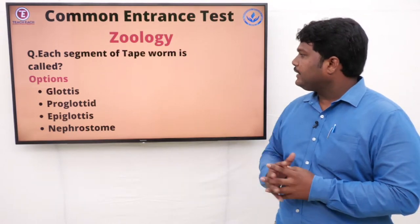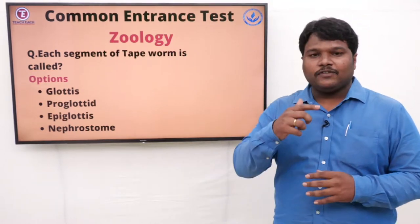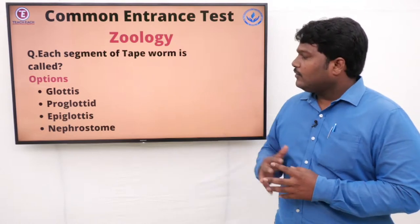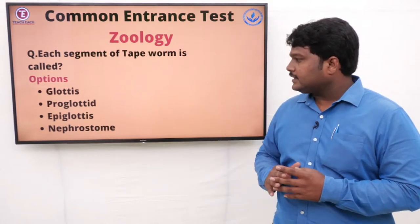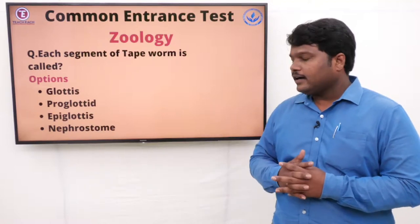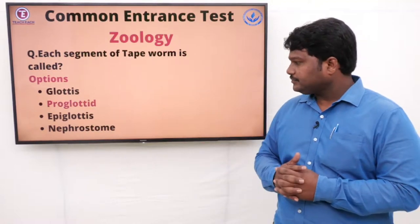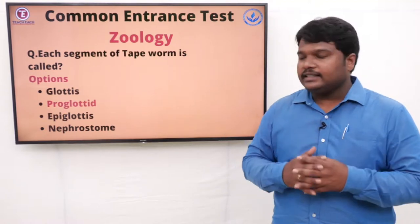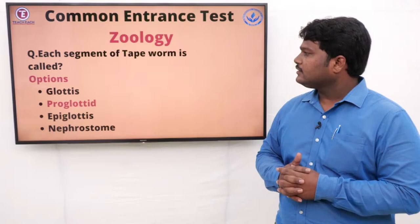Question 28: Each segment of tapeworm is called. Tapeworm has different segments. Options: A) Glottis, B) Proglottis, C) Epiglottis, D) Nephrostome. The right answer is proglottis. The tapeworm segment is called proglottis.